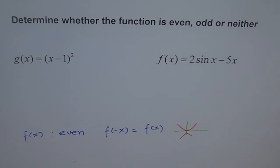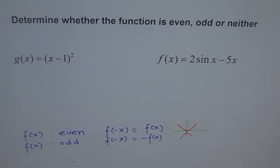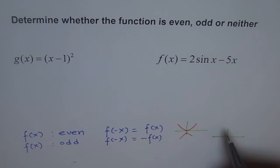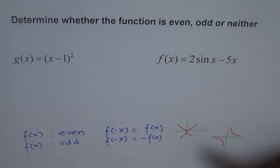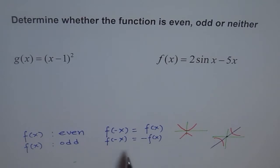When is a function odd? We say f(x) is odd if f of minus x is equal to minus of f(x). Odd functions have symmetry about the origin. Functions which are odd are normally like 1 over x, or a line through the origin. If you see these functions, they are symmetric about the origin.